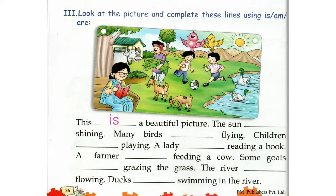The sun. How many suns do you see in the picture? Only one. So we will use Is. The sun is shining.